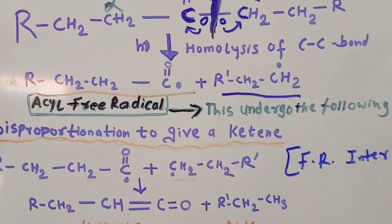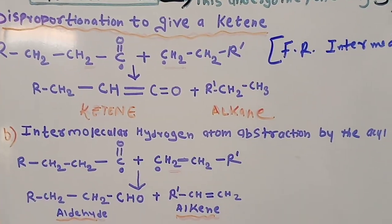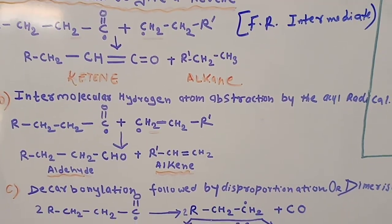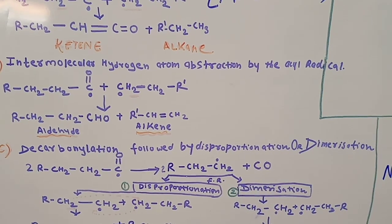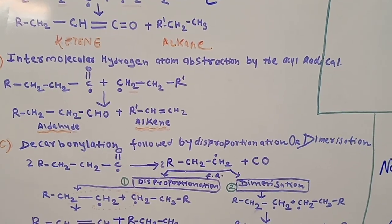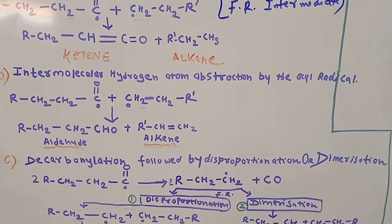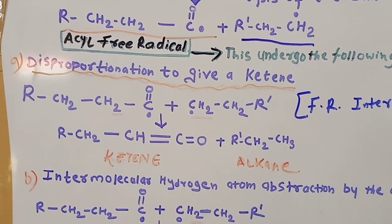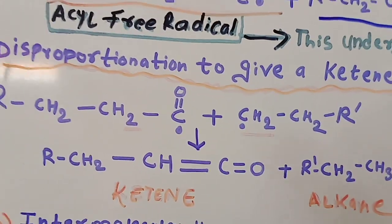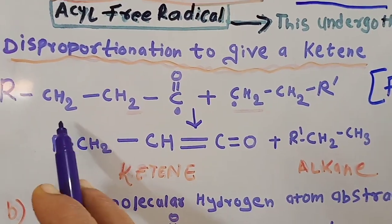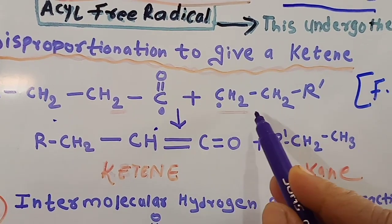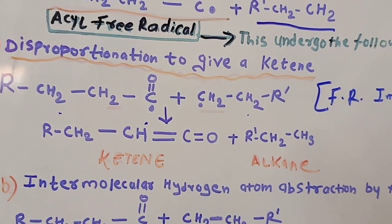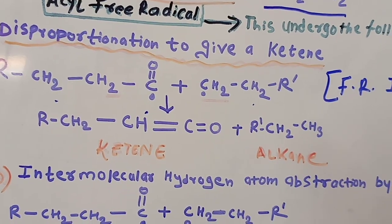The two free radicals formed can undergo three processes. First is disproportionation to give a ketene. Second is intermolecular hydrogen abstraction by the acyl radical. Third is decarbonylation followed by disproportionation or dimerization. Let us see the first: disproportionation to give ketene. The acyl free radical and the other free radical fragment undergo disproportionation to give a ketene and an alkane.